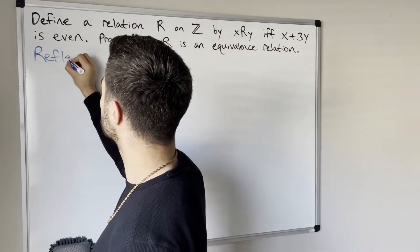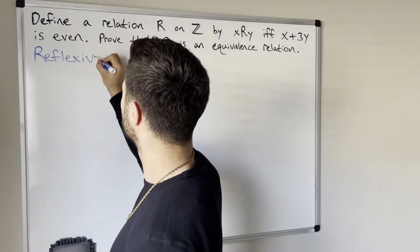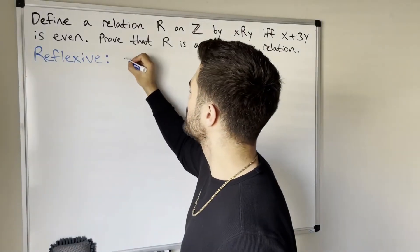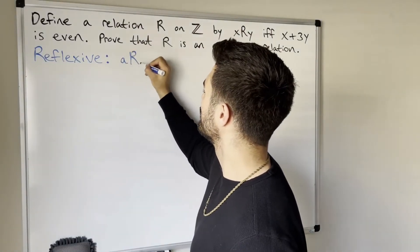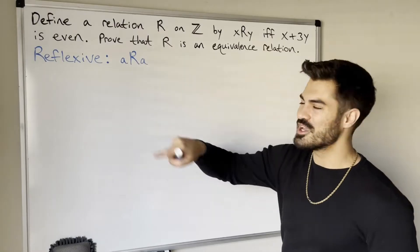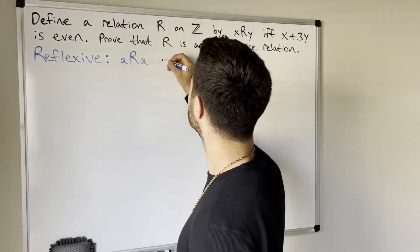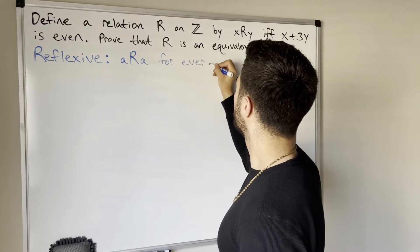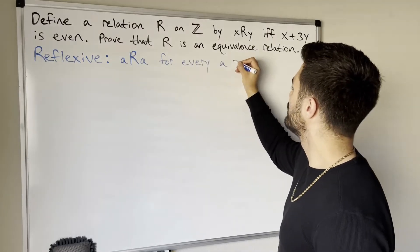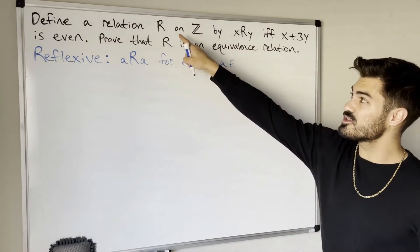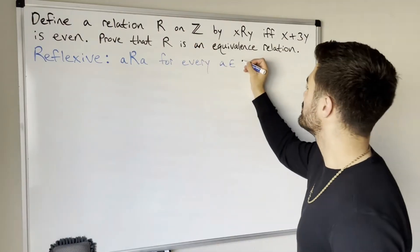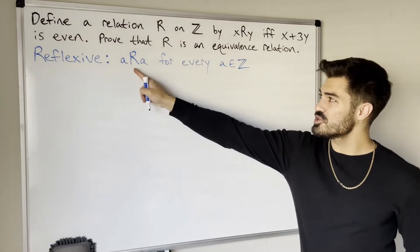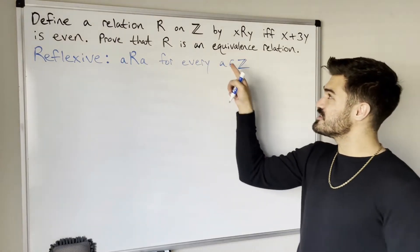Let's start with reflexive. Reflexive means a is related to a for every element a in the set the relation is defined on — I remember this by thinking about reflection since a appears on both sides. In this case, we need to show a is related to a for every integer a.